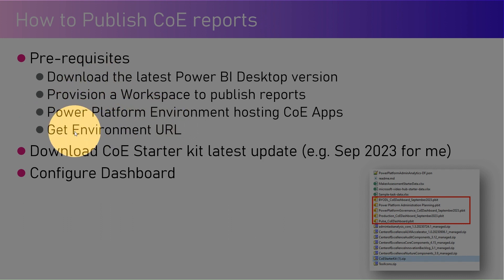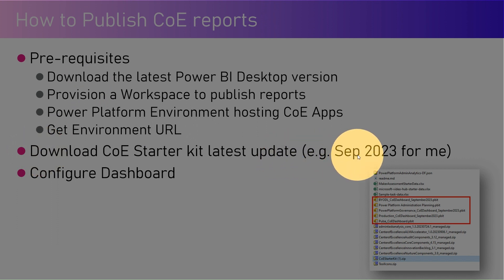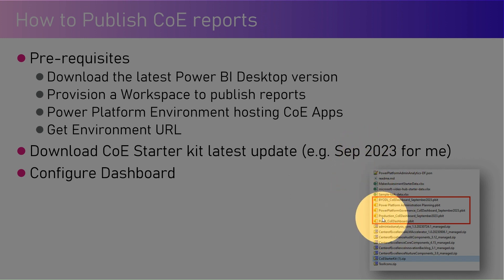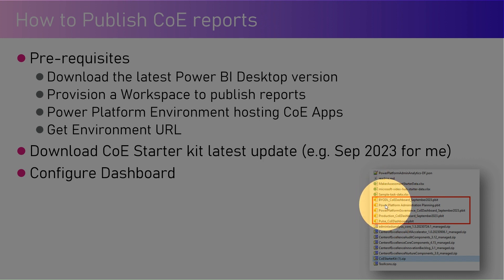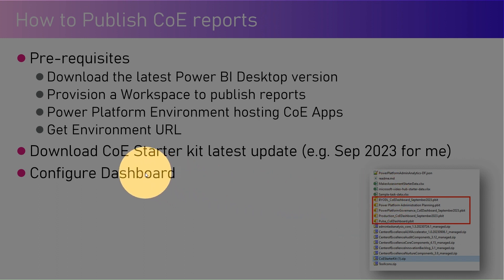You need to get the environment URL — I'll show you all the steps in action. You need to download the CoE Starter Kit latest update, which is September 2023 for me as of the recording. Once you download the starter kit, you will see about five pbit files, which are Power BI template files. You need to generate a pbix file — an instance file — out of those pbit files. I'll show you how to do that, and then you can configure the dashboard.